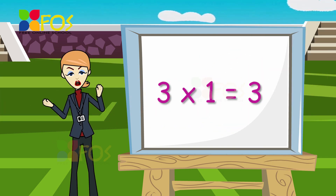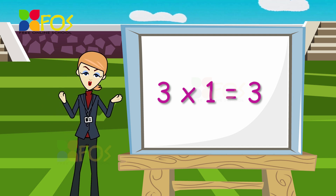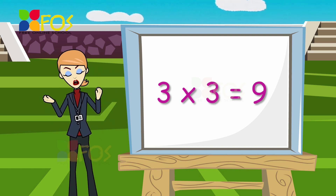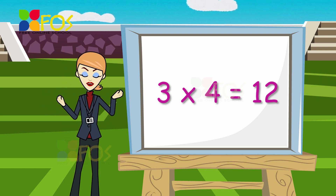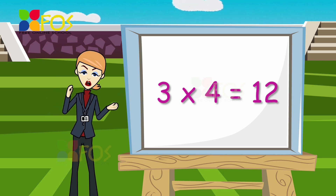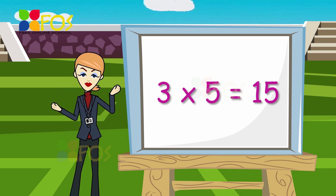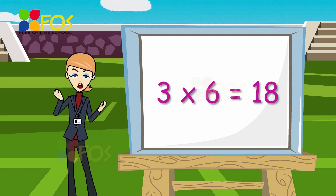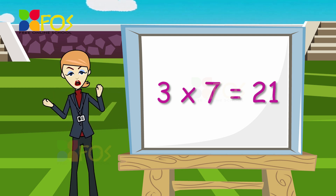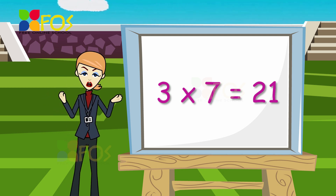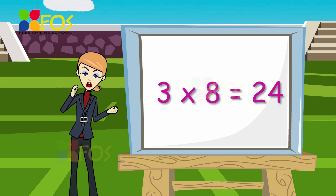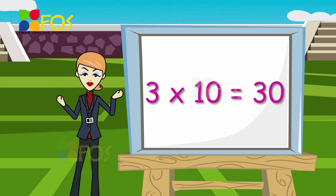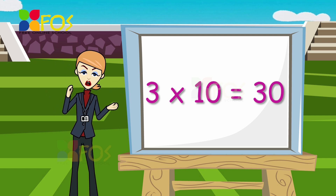Three ones are three. Three twos are six. Three threes are nine. Three fours are twelve. Three fives are fifteen. Three sixes are eighteen. Three sevens are twenty-one. Three eights are twenty-four. Three nines are twenty-seven. Three tens are thirty.